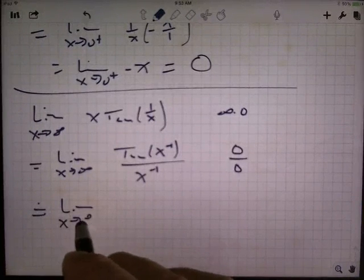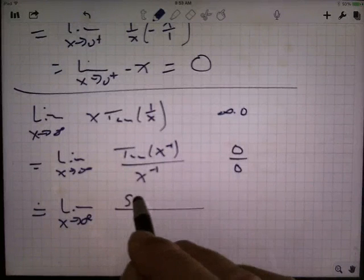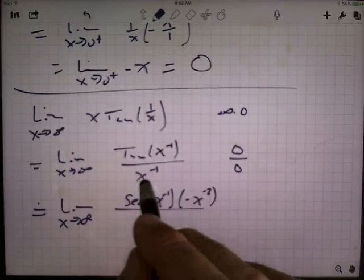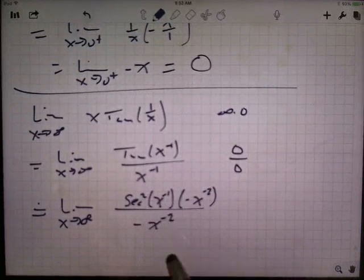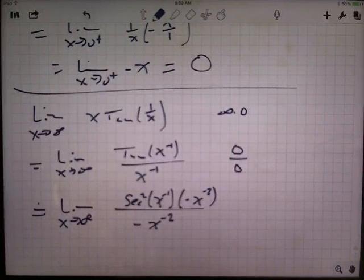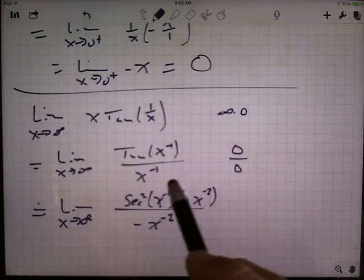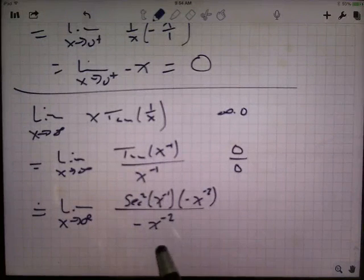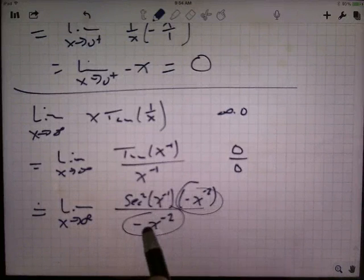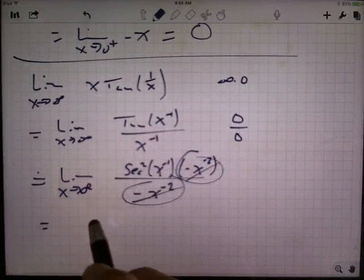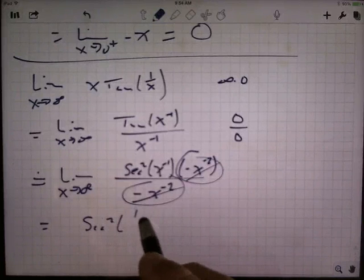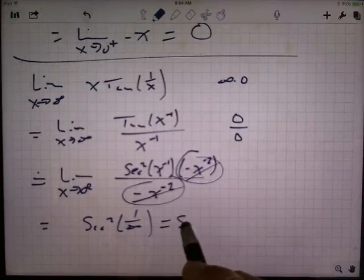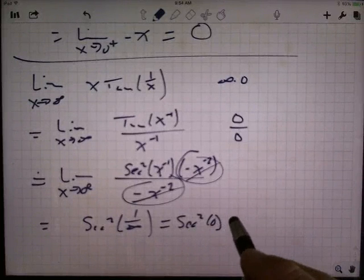By L'Hôpital's rule, the limit as x goes to infinity: the derivative of the top is sec²(x⁻¹) times the derivative of x⁻¹, which is −x⁻². The derivative of the denominator is also −x⁻². Note we are not using the quotient rule — I'm taking the derivative of the top and the derivative of the bottom separately for L'Hôpital's rule. The −x⁻² terms cancel, leaving the limit of sec²(1/x) as x→∞. Since 1/x → 0, this is sec²(0). The secant of 0 is 1, squared is still 1.